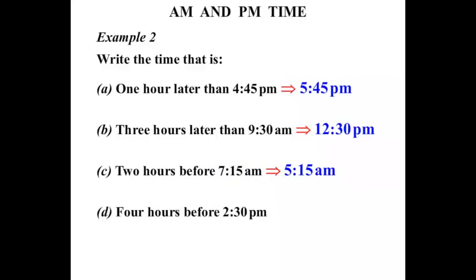What about four hours before 2:30 PM? Well 2:30 PM, that's after midday, but if we go back four hours we'd expect to finish off in the morning, wouldn't we? So let's think: 2:30, let's go back an hour at a time. 2:30 back one hour would be 1:30. Back another hour 12:30. Back another hour 11:30, and back one more hour would be 10:30. So it would be 10:30 AM.